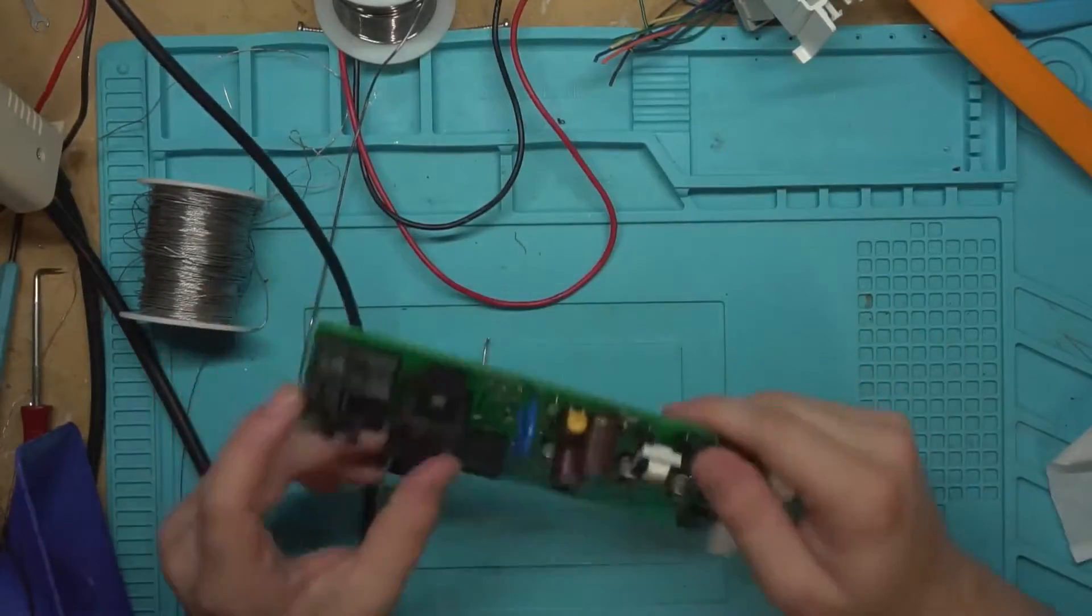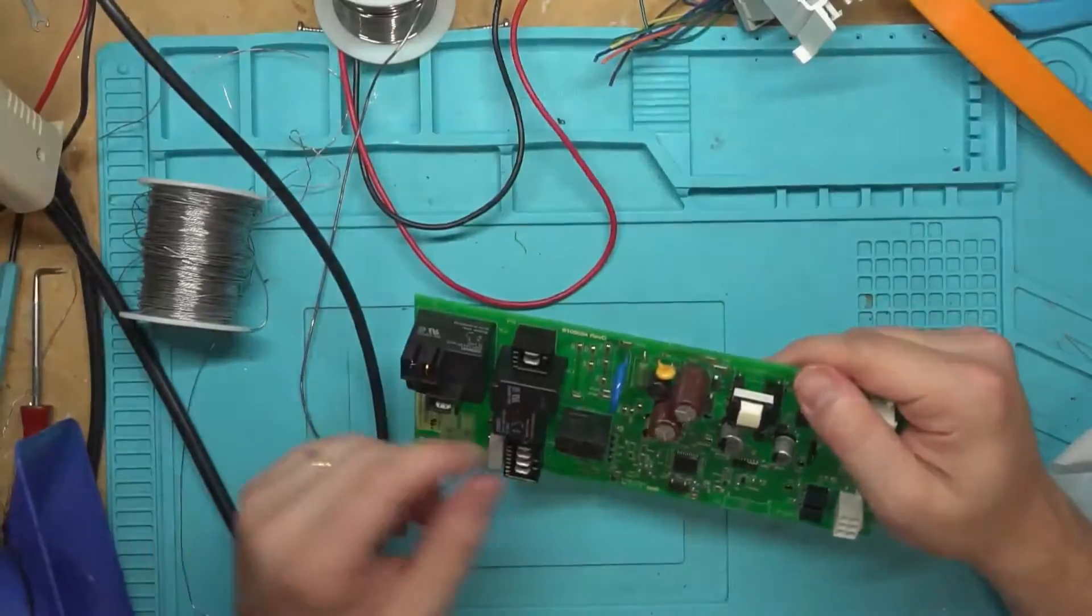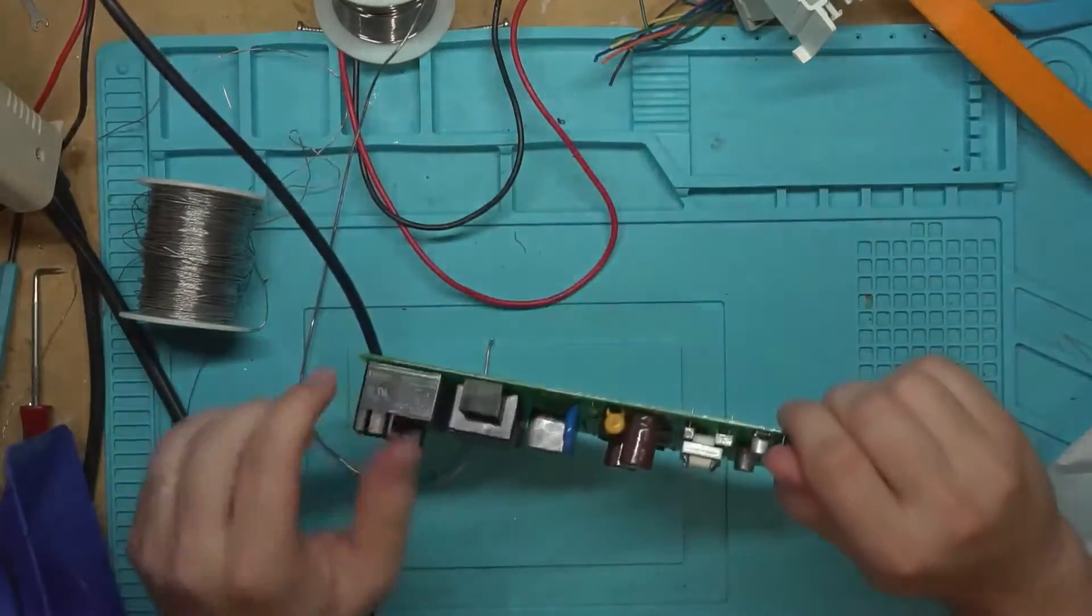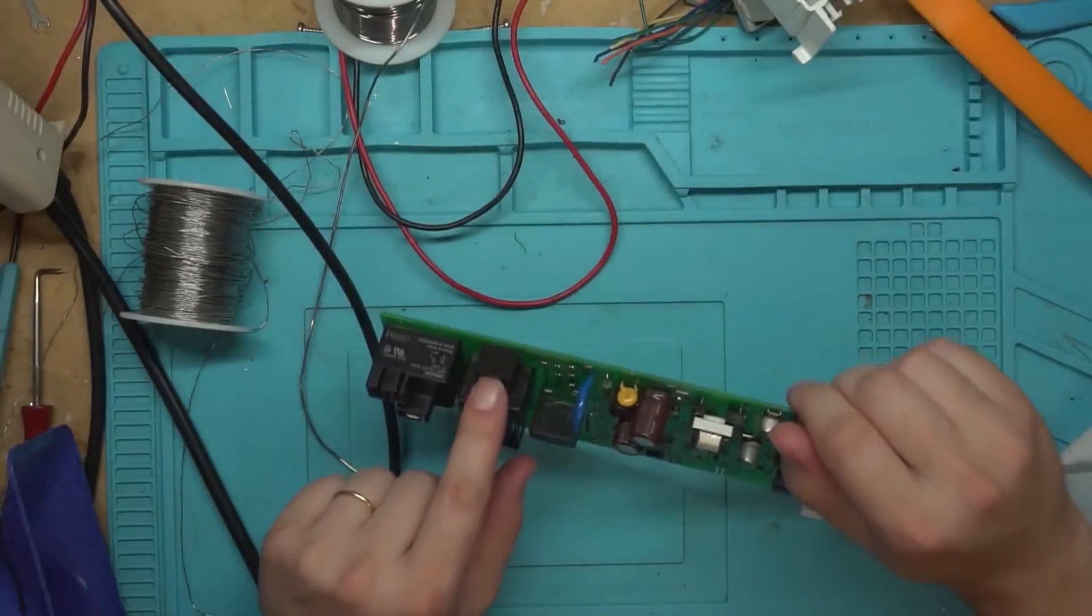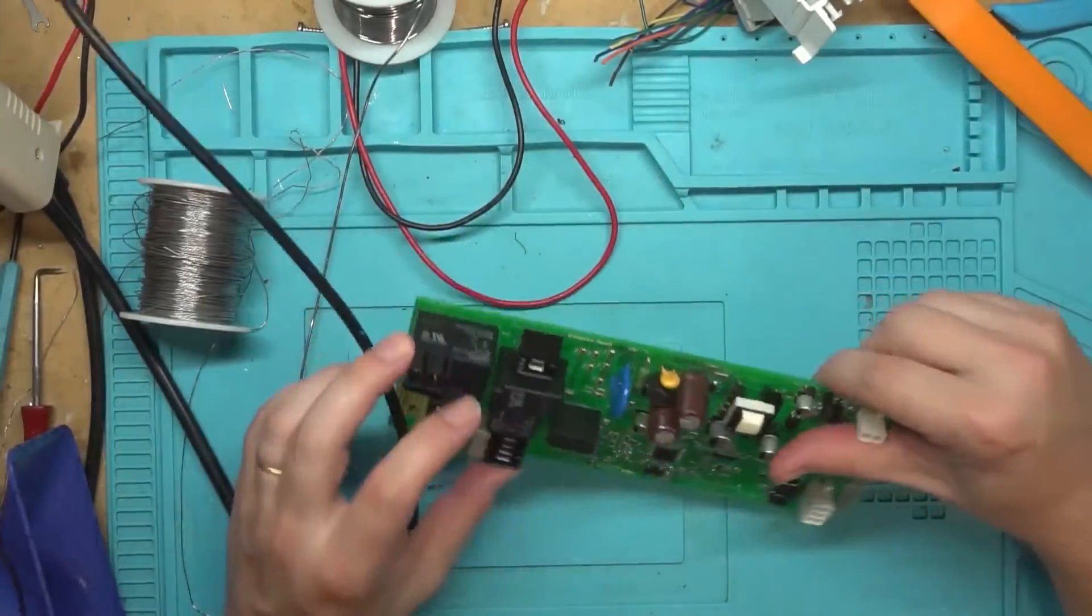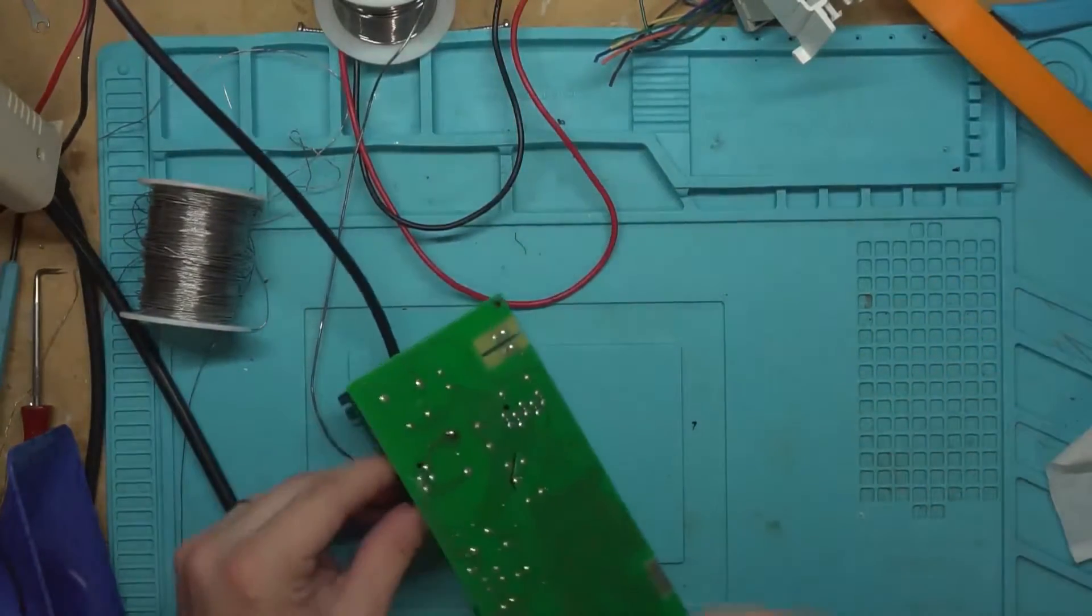I mean, unless it's a design flaw where there's too much current flowing through here, there's probably still something wrong with whatever connects to this, which I would assume is probably a motor just judging by the size of those connections there.